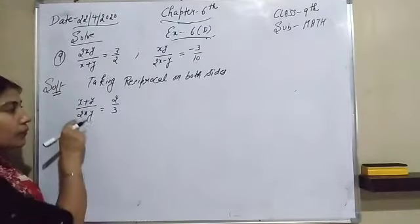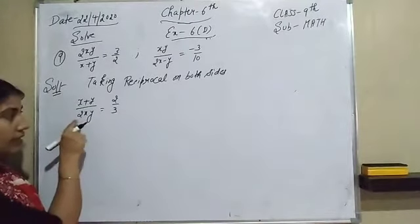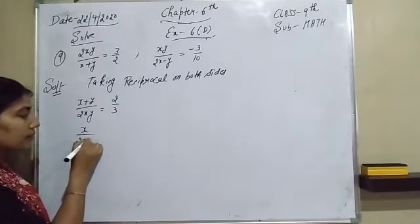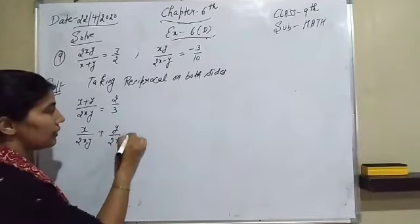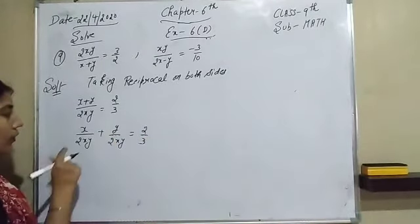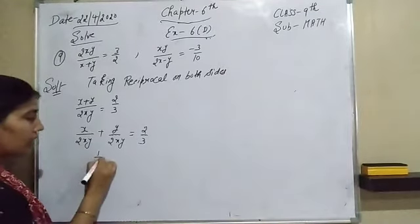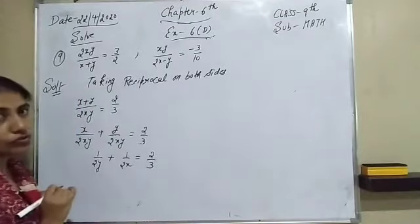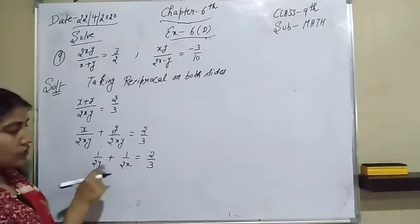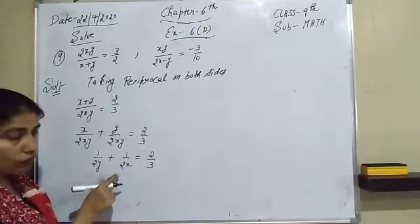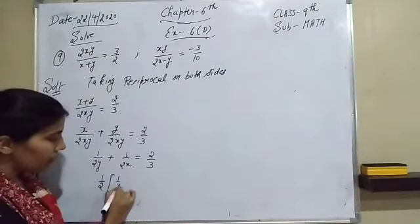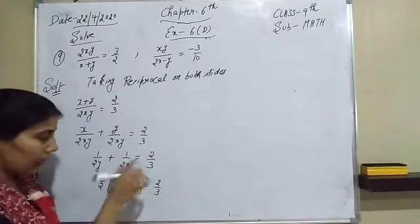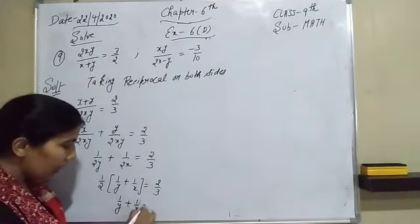Now we divide the numerator separately by the denominator 2xy: x/(2xy) plus y/(2xy) equals 2/3. The x's cancel in the first term giving 1/(2y), and the y's cancel in the second giving 1/(2x). So: 1/(2y) + 1/(2x) equals 2/3. Taking 1/2 as common: 1/y + 1/x equals 4/3. That is our first equation.